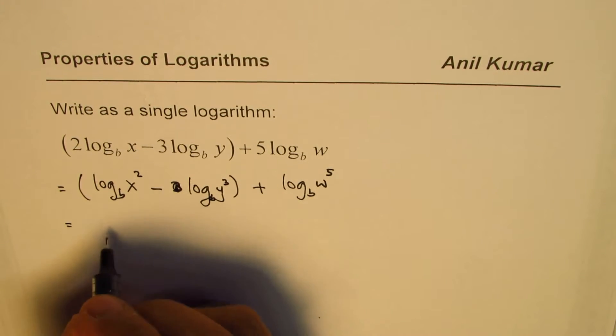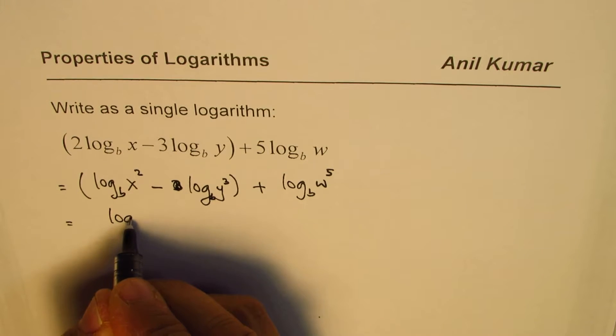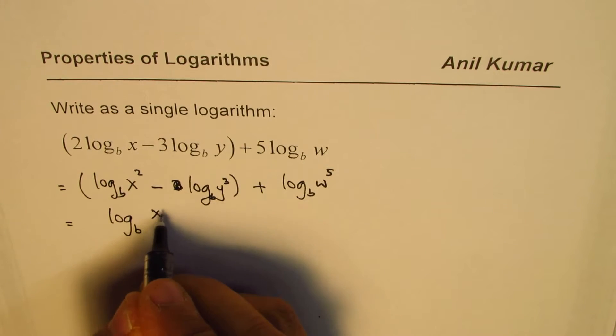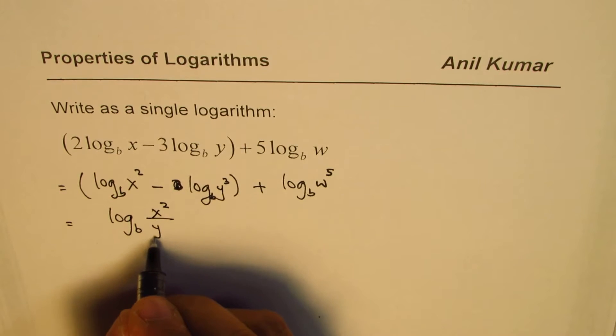These two, when with minus, they can be written as quotient, so we can write this as x squared over y cubed.